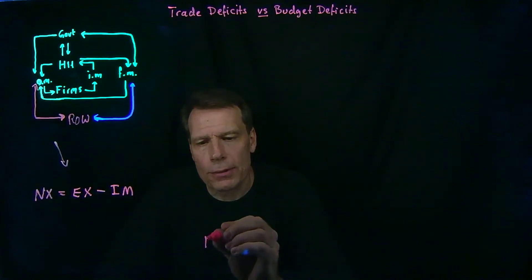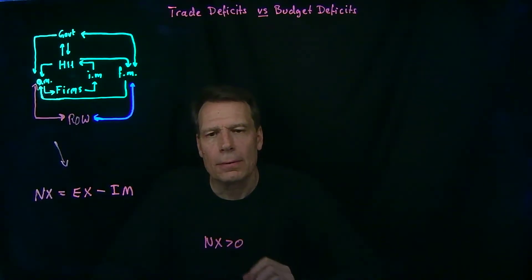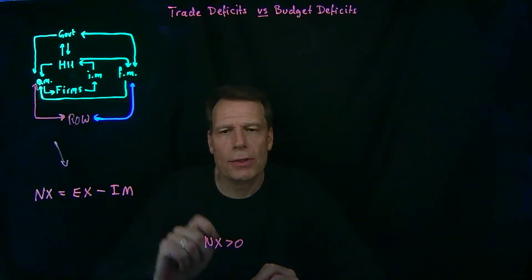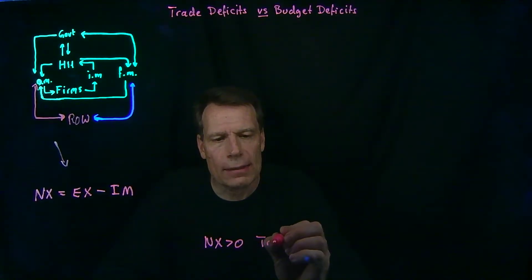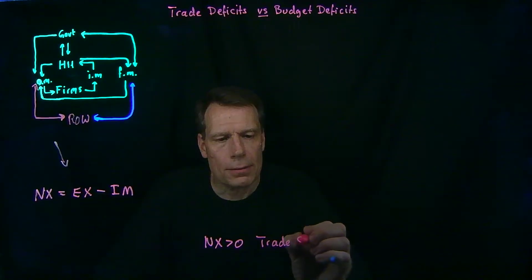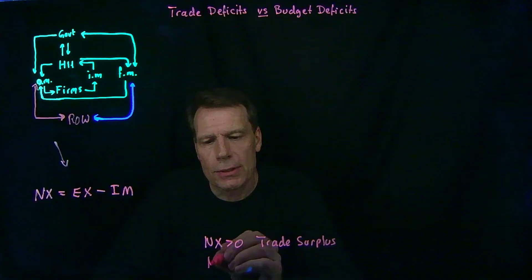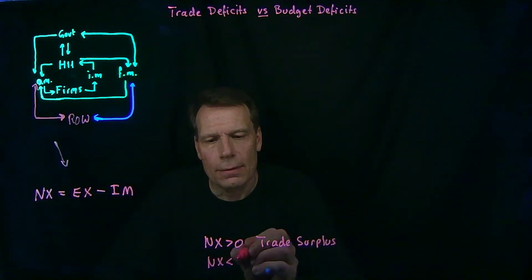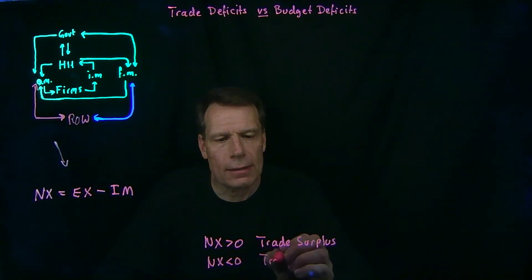When net exports are greater than zero, it means that exports are larger than imports, and we call that a trade surplus. When net exports are negative, it means that imports are larger than exports, and we call that a trade deficit.